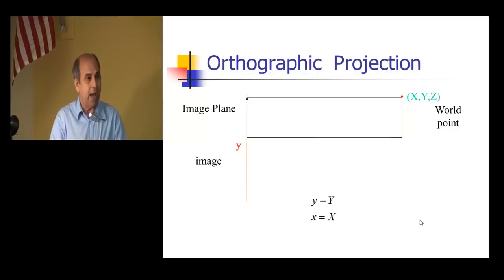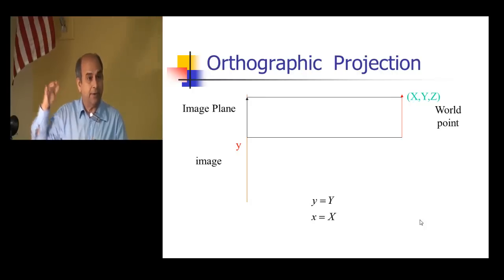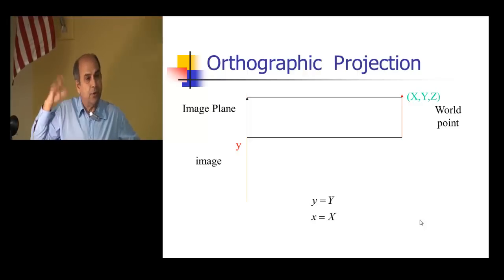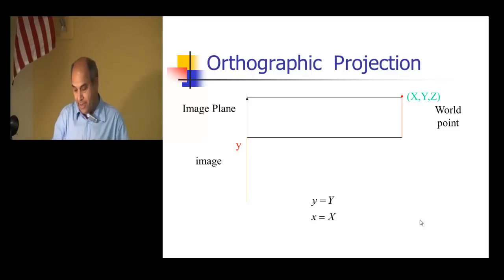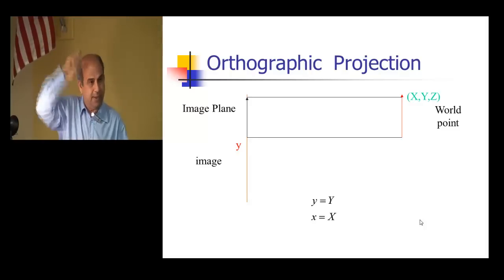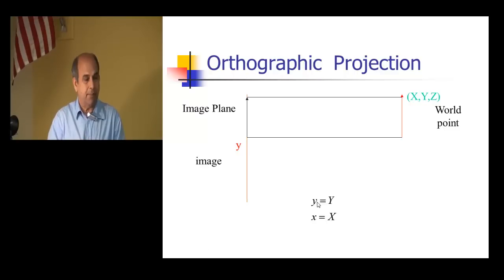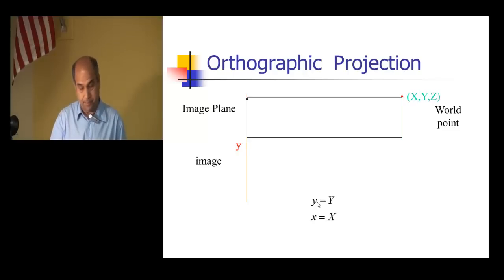There is another projection called orthographic projection. If you take a picture from very far away — like a UAV, an unmanned aerial vehicle — it's thousands of feet from the ground, so there's no perspective effect. The distance is so far that the image coordinates x and y are approximately equal to the actual uppercase X and Y, and don't depend on the depth Z. That's called orthographic projection; it's a simpler model.